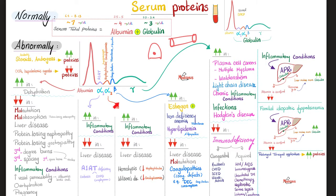Alpha-2 globulins include haptoglobin, ceruloplasmin, and angiotensinogen. They increase in inflammatory conditions and decrease in liver disease, hemolysis — specifically haptoglobin — and Wilson's disease, specifically ceruloplasmin.